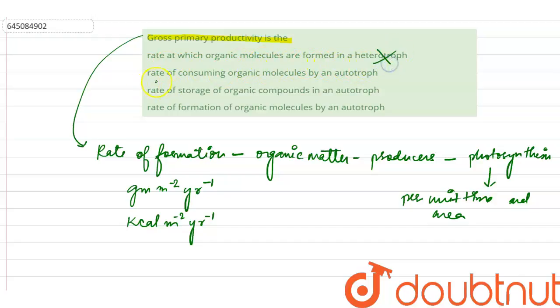So if we see the options here, it is saying that which organic molecules are formed in a heterotroph? This is wrong. Rate of consuming organic molecules by autotroph? This is also wrong. Rate of storage of organic compounds in an autotroph? It is also wrong.